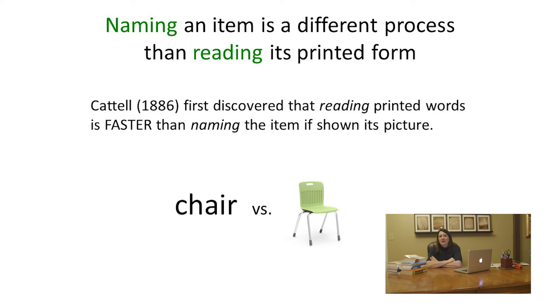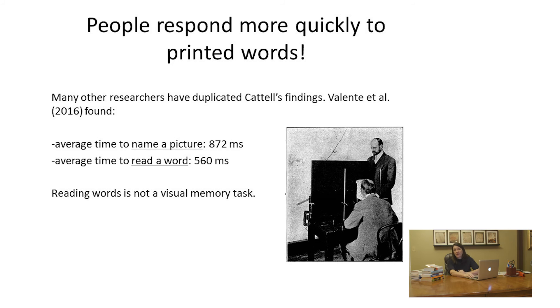The characteristics of objects are processed in a different place in the brain and take a longer process than seeing something in print and reading it. Many researchers have duplicated this finding. Valente found the average time to name a picture is 872 milliseconds, but to read a word, the average time is only 560 milliseconds. So reading is, again, not a visual task. That's pretty powerful proof.